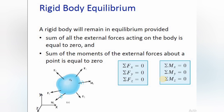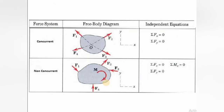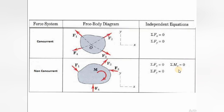For 2D problems, which are our main concern, the equilibrium conditions reduce to three independent equations: ΣFx = 0 (algebraic sum of horizontal forces), ΣFy = 0 (algebraic sum of vertical forces), and ΣMz = 0 (algebraic sum of moments about the z-axis, perpendicular to both x and y). These three conditions are applied to solve complex 2D engineering problems.